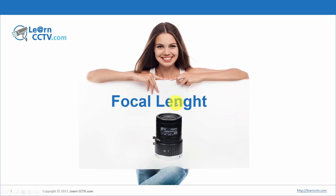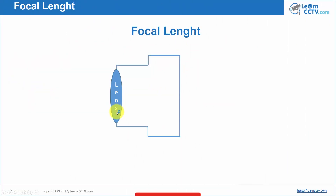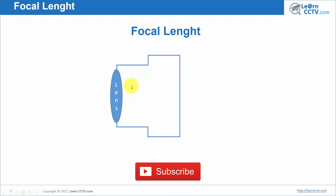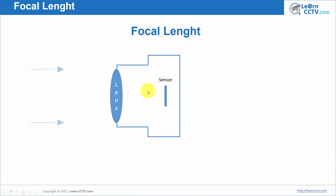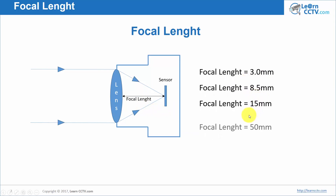Let's understand this better by taking a look at the presentation. Here I have my lens and the representation of a camera. It's a group of glass — I'm representing it as a single glass for better understanding. Here I have my sensor, and then I have rays of light coming through the lens hitting the sensor. Here is my focal length — that could be 3 millimeters, 8.5, 15, or 50. What matters is that I can change the distance from the lens to the sensor by changing the focal length.